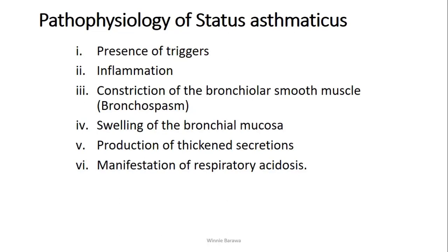As inflammation occurs, there is constriction of the bronchiolar smooth muscles — what we call bronchospasm — so the bronchioles tend to constrict or reduce in diameter. Additionally, there is swelling of the bronchial mucosa, which is the covering of our bronchioles or airways. As this mucosa swells, it further reduces the diameter, making breathing increasingly difficult. Because this is also an inflammatory process, there is now excessive production of thickened secretions, which block the airways and worsen the difficulty in breathing, resulting in what we call respiratory acidosis.